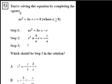We're on problem 53. It says, Tony is solving this equation by completing the square, ax squared plus bx plus c equals 0, where a is greater than 0. So this is just a traditional quadratic right here.